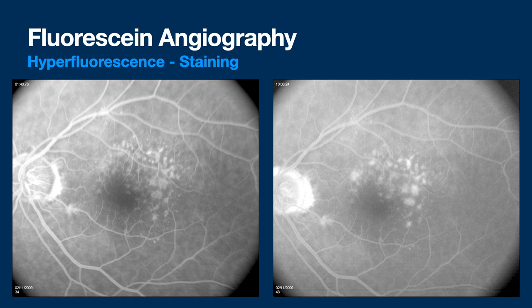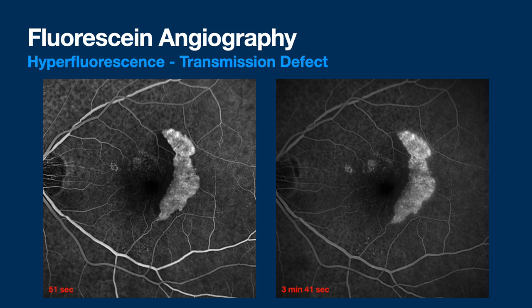Here's a staining example — these are drusen. Staining means brightness in an area that maintains its boundaries over time; it's generally thought to happen to solid tissue. Next, a transmission defect: this lady had a spontaneous RPE rip. Temporal to her fovea you see this bright white dash — that's where the RPE got pulled back, exposing the underlying choroidal fluorescence. It's like someone opened the curtain — the RPE is no longer blocking it. This is a good illustration of what we mean when we say the RPE acts like a curtain.